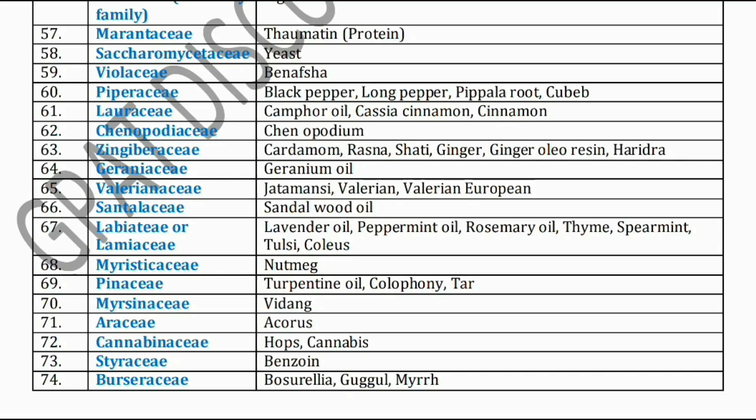Next family is Labiatae or Lamiaceae family. It includes Lavender oil, Peppermint oil, Rosemary oil, Thyme, Spearmint, Tulsi, and Coleus. The maximum plants of this family are included under volatile oils.